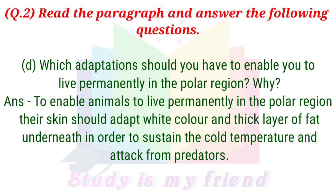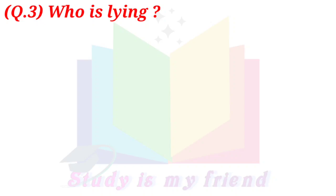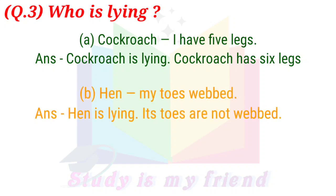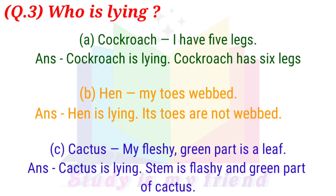Question 3: Who is lying? A. Cockroach: "I have 5 legs." Answer: Cockroach is lying. Cockroach has 6 legs. B. Hen: "My toes are webbed." Answer: Hen is lying. Its toes are not webbed. C. Cactus: "My fleshy green part is my leaf." Answer: Cactus is lying. The stem is the fleshy and green part of cactus.